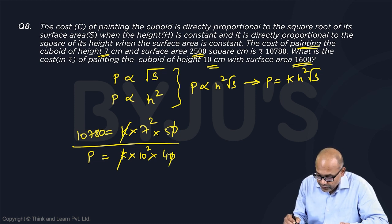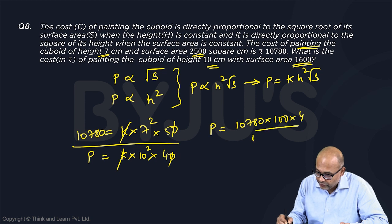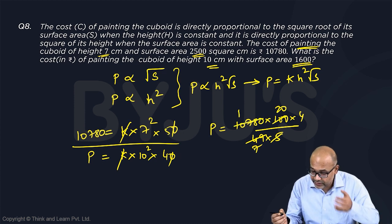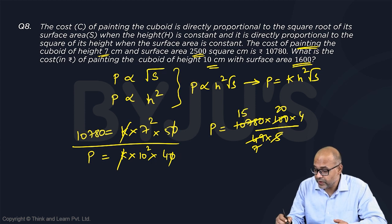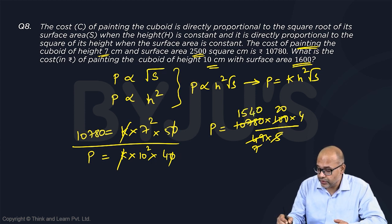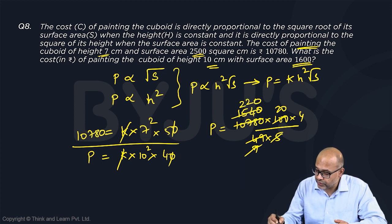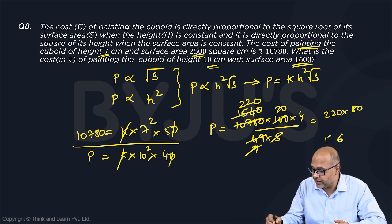This gives me P equals 10,780 times 100 times 4 divided by 49 times 5. So 5 goes 20 times, 7 times 7 are 49, carrying through the arithmetic... 7 times 5 are 35, continuing the calculation... So this is 220 times 80, which gives 17,600.